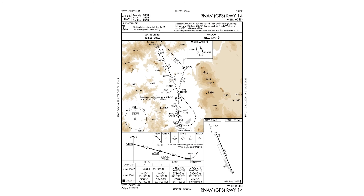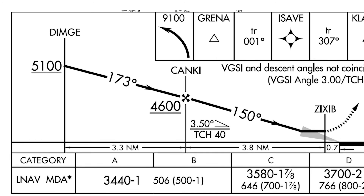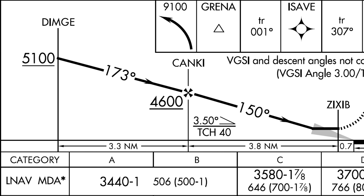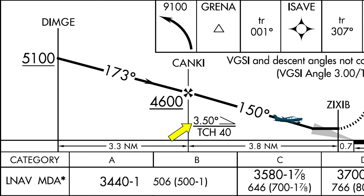On a non-precision approach, there is no official vertical guidance, so maintaining a stable, continuous descent angle is a bit more complicated. On many non-precision approaches, this descent angle is published as the VDA, or vertical descent angle. Here on the RNAV-14 in Weed, California, the VDA is 3.5 degrees. Following that descent angle from the final approach fix at 4,600 will cross the runway threshold at 40 feet.